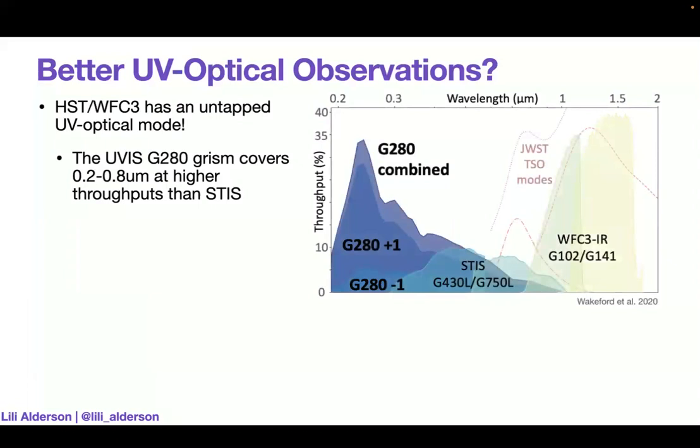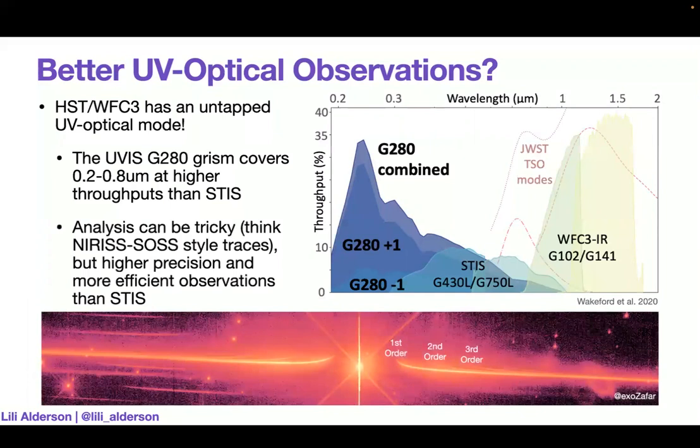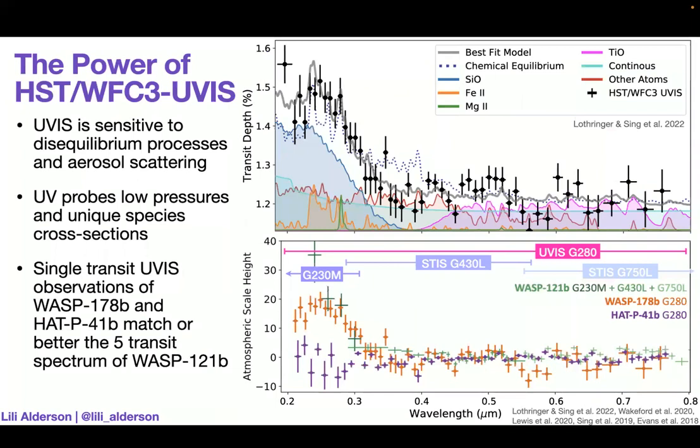We're going to be combining NIRISS, NIRSpec G395H, and MIRI LRS to get from about 0.6 to 12, depending on your opinion of how good MIRI is, microns, to get this really comprehensive coverage of the infrared. But that doesn't help us with the better UV optical observations. But actually, HST WFC3 has this untapped UV optical mode. So the UVIS G280 grism, which covers from about 0.2 to 0.8 microns, does so at higher throughputs than STIS in that similar wavelength range. And while analysis can be quite tricky, so we've got these kind of NIRISS style curved traces, we get much higher precisions, and we get much more efficient observations than we could with STIS. For example, you might need three transits with STIS to get comparable coverage in wavelength range that you can get with G280. And the real power of this grism is that we're sensitive to disequilibrium processes and aerosol scattering, and we're probing these really low pressures within the atmosphere, getting access to unique species that we don't normally get to see.